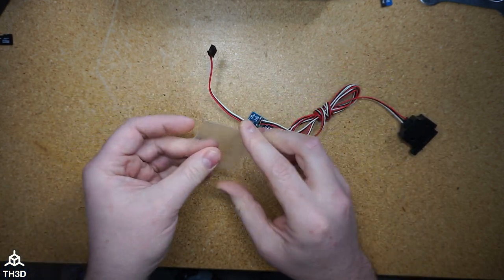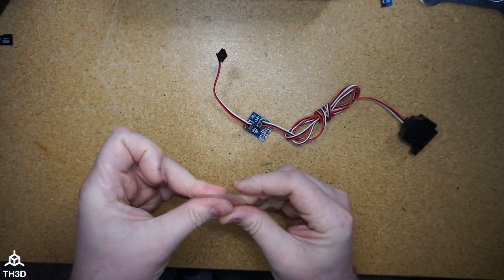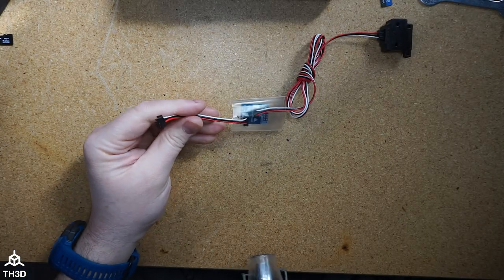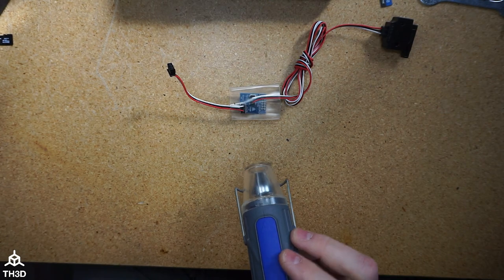And then we're going to go ahead and put the heat shrink over the assembled adapter board. So once you have the heat shrink over it, just take a heat gun and shrink it down.